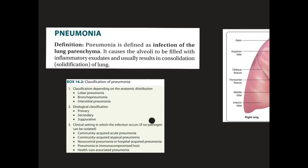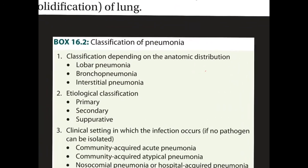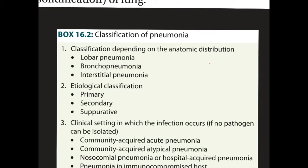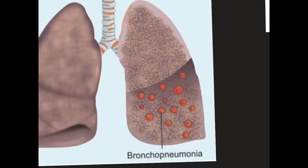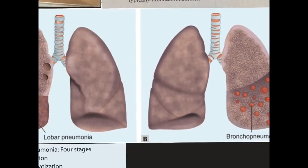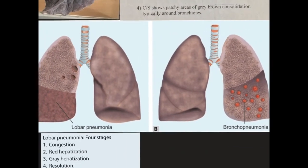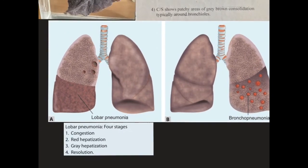Pneumonia is classified depending on anatomic location, etiology, or clinical setting. According to anatomy, it can be divided into lobar pneumonia, bronchopneumonia, or interstitial pneumonia. In today's practical you have two gross specimens — one for bronchopneumonia and one for lobar pneumonia.